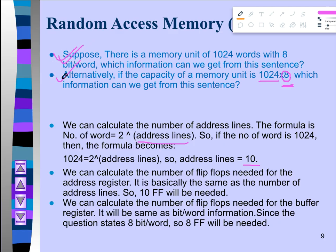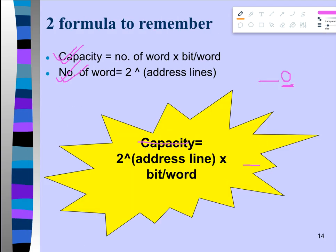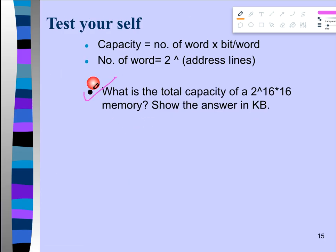So those are the pieces of information we can derive from such sentences. Now let's move on to some other mathematics. Using the two formulas already shown, we can solve further problems. For example: what is the total capacity of a 2^16 × 16 memory? Show the answer in kilobytes.